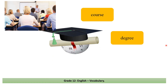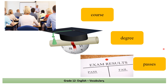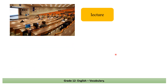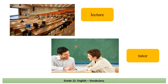Let's look at more vocabulary. 'Course' is a series of lessons you take. 'Degree' is the certificate you achieve after a course of study in a college or university — a kind of qualification. 'Passes' means a successful result in an examination. 'Lecture' is a class in a university. 'Tutor' is a person who works with one student or two outside school or university.